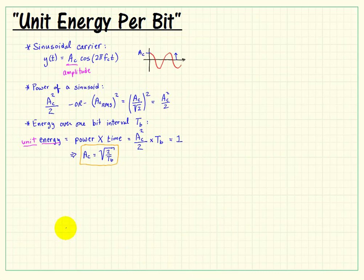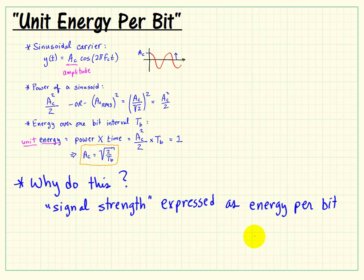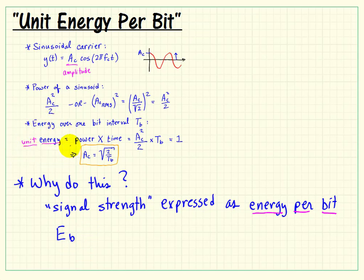Why do this? Normally for digital signals, we think of signal strength as being expressed in terms of energy per bit. So if we can get the sinusoidal carrier to have unit energy per bit, then our energy per bit value, E sub b, can be used to choose the appropriate amplitude for the end result.